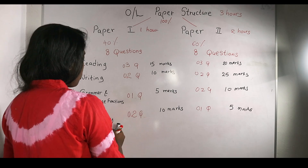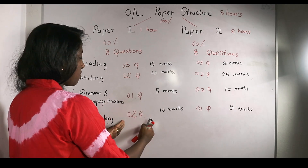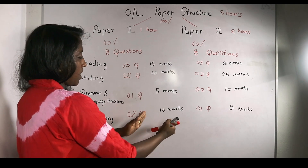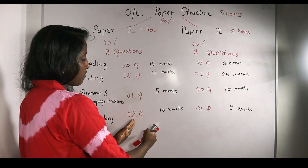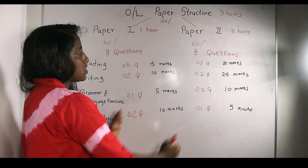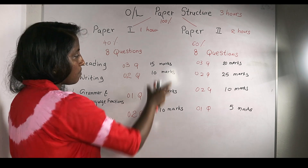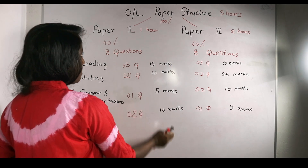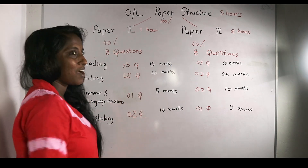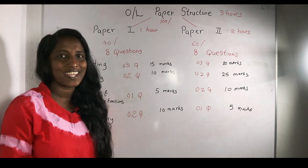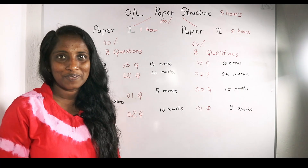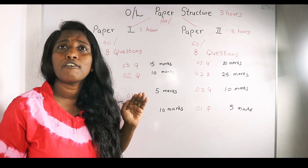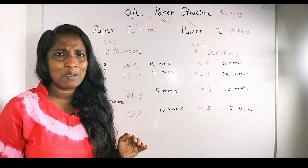For the vocabulary reading section, we can use it as 5 x 2, which gives 10 marks. We can also have 40 marks allocated in the paper.